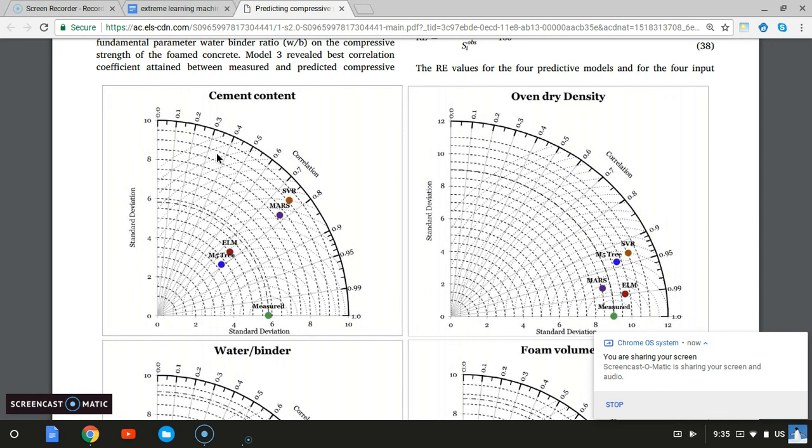You can see that SVR lies on this point. Let's say the correlation of SVR points is 0.75, so 7.5 is right here. 7.5 and 9 would be right here. So 9, 7.5.